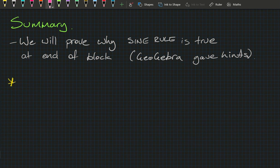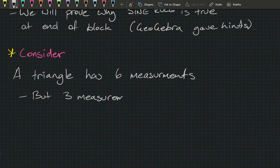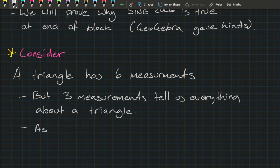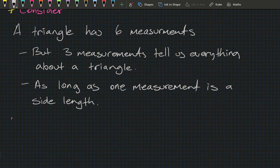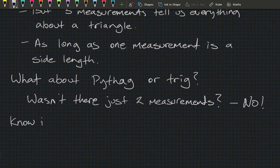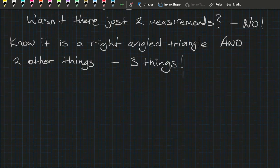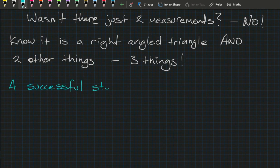Something worth considering: a triangle has six measurements, but three measurements are all we need to fully define it, as long as one of those is a side length. You might ask about Pythagoras or trig — those required only two measurements. But knowing it was a right-angled triangle and two other things actually means you know three things about it.